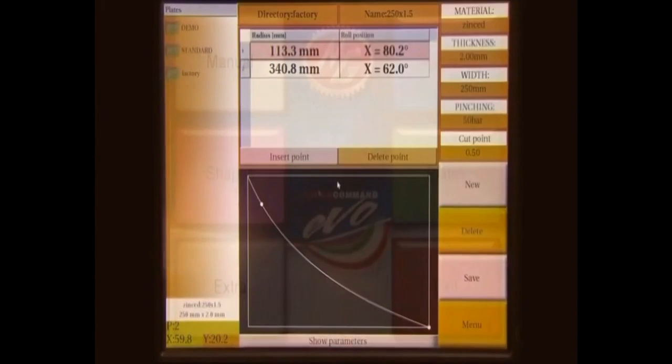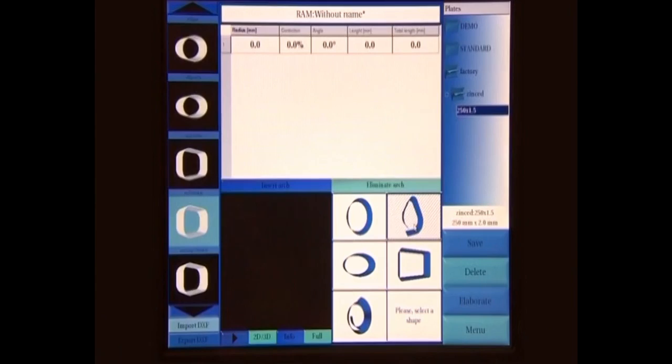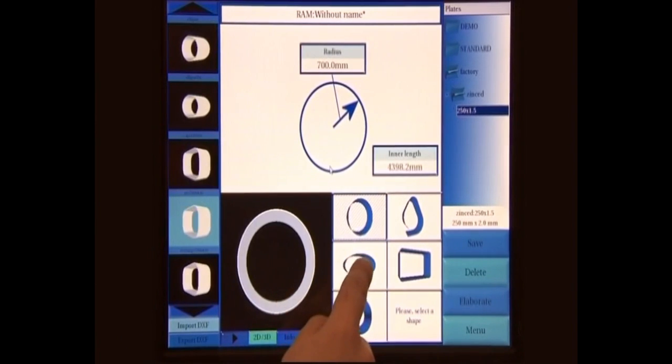The first phase is over. We can now enter the shape data. From the main menu, let's open the shapes window, in which we can select the kind of shape and enter its dimensions.